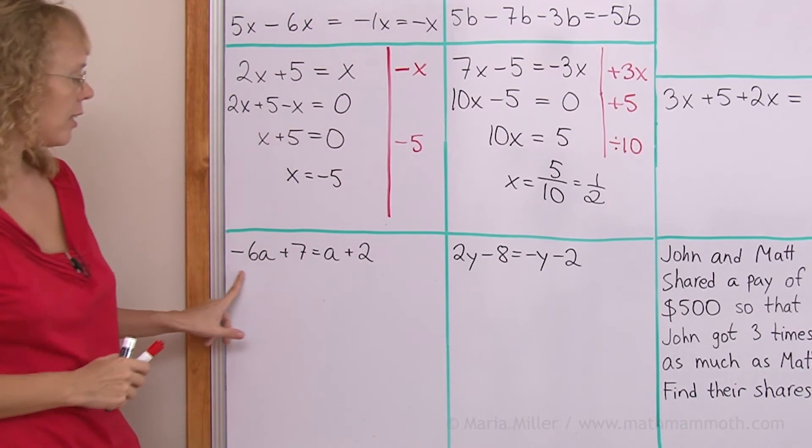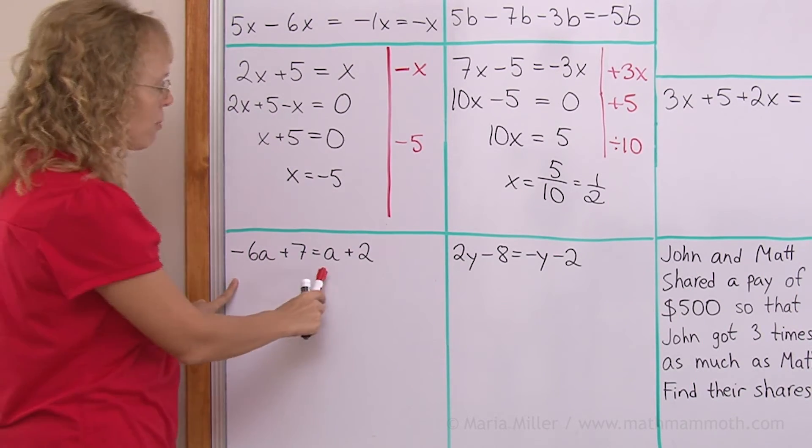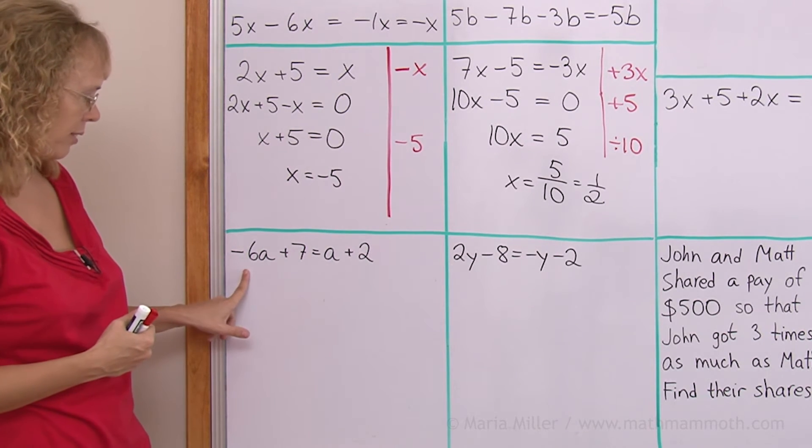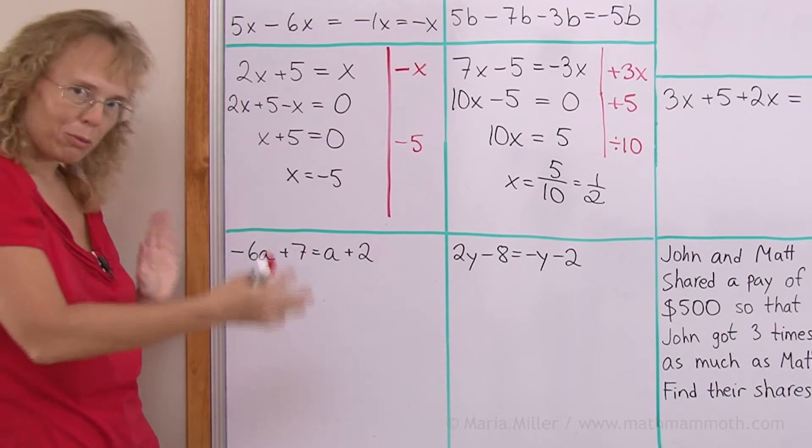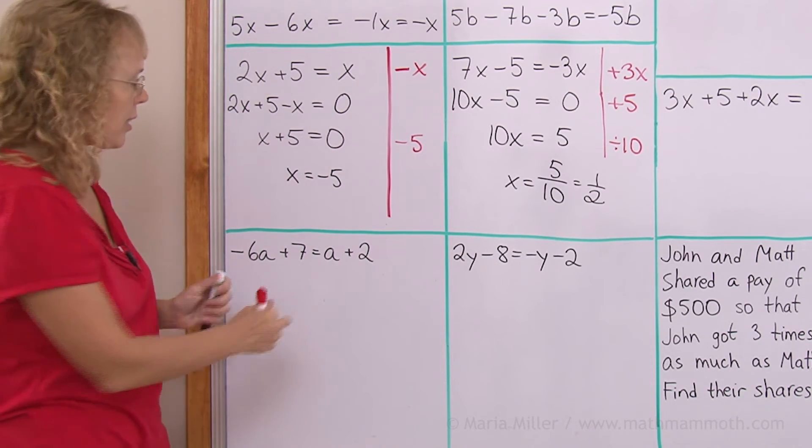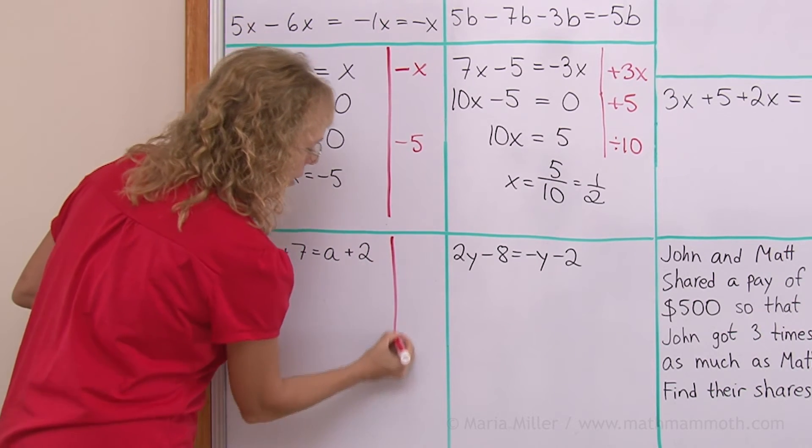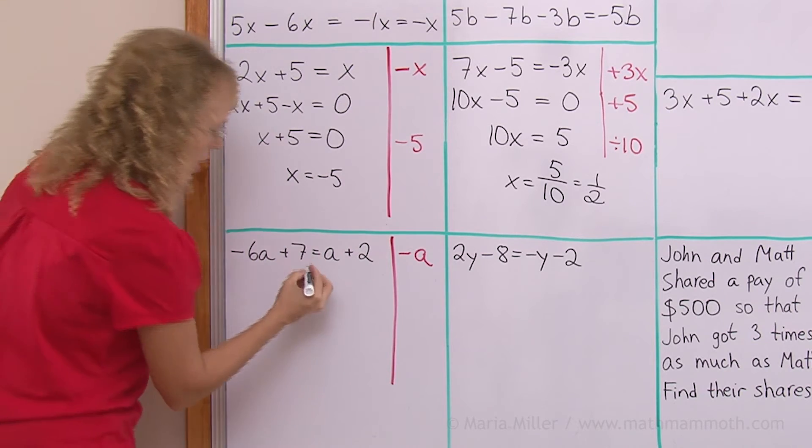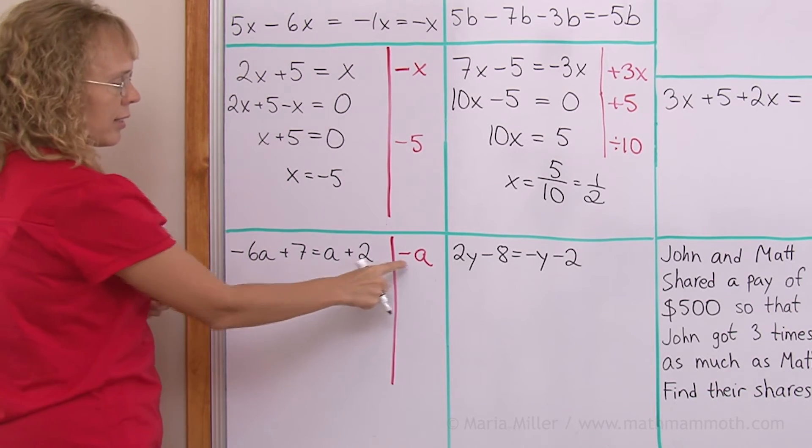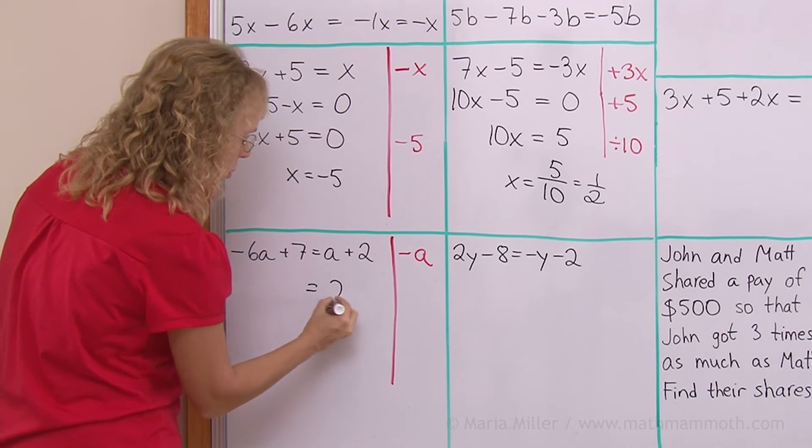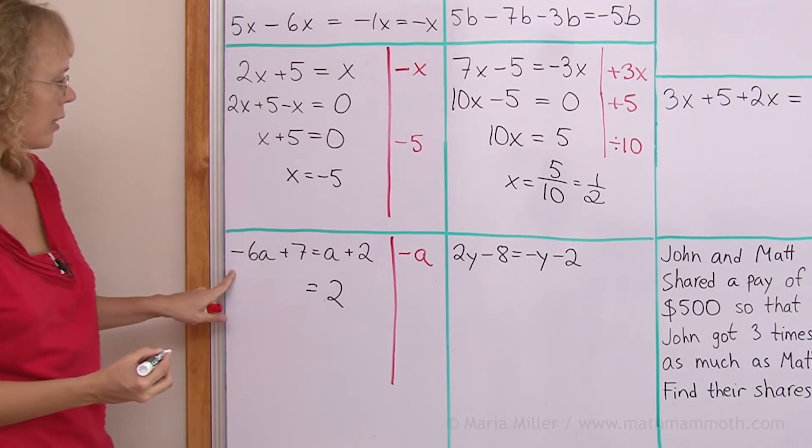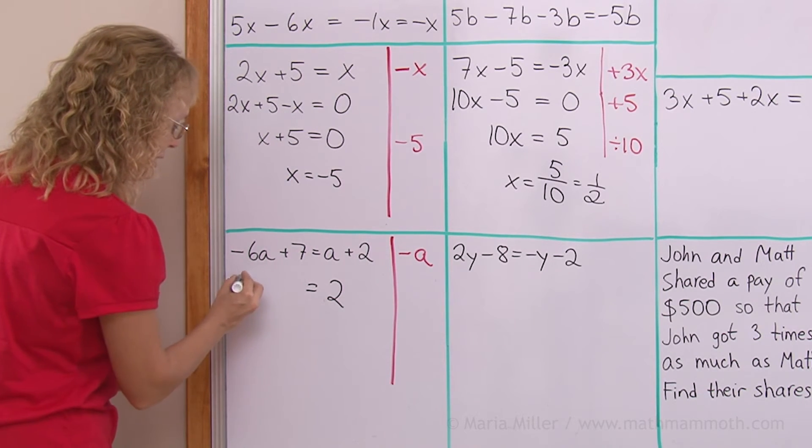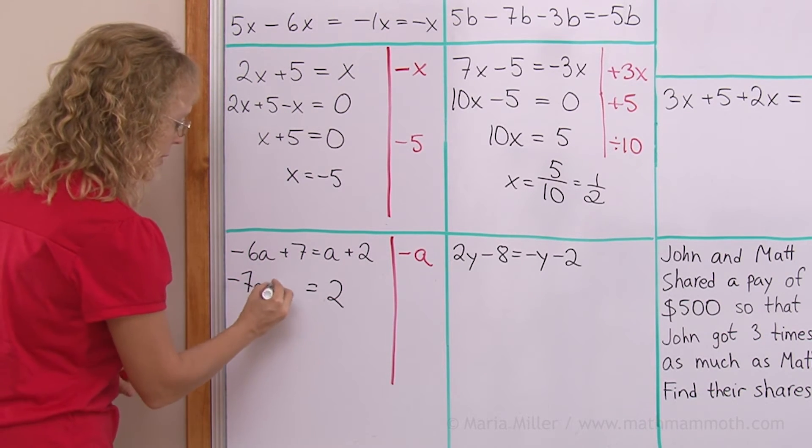Here, negative 6a here and a on this side. The variable is on both sides. But I want to get rid of one of these. Either this or that. So, that I have my a, the variable only on one side. So, let's say that I get rid of this one. And I subtract a from both sides. On this side, a subtract a. So, those cancel. And then I'm left with this 2 alone. On this side, negative 6a minus a. So, that would give me negative 7a, right? Then plus 7 is still there.